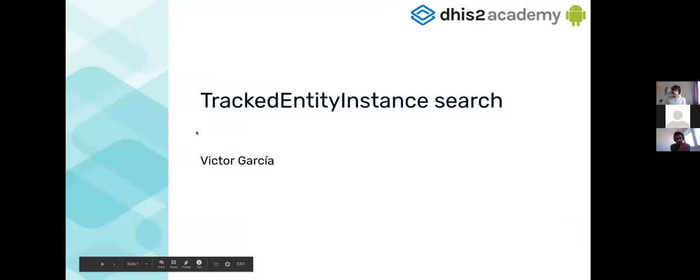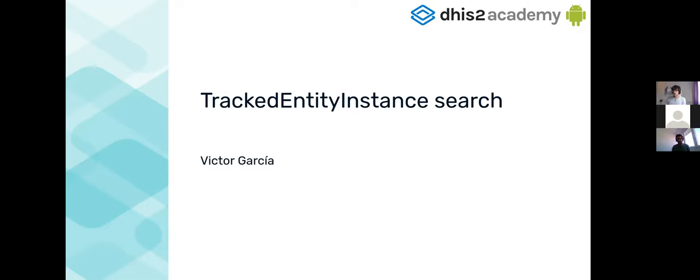This session is about listing data in the Android app — specifically about searching tracking entity instances. In the previous exercise we saw how to filter and display metadata in the Android app, and for metadata it's always the same: you can filter, page, it's very generic. Once you've done it with programs you can do the same for other things. In the case of data, it has a few things that are different from metadata.